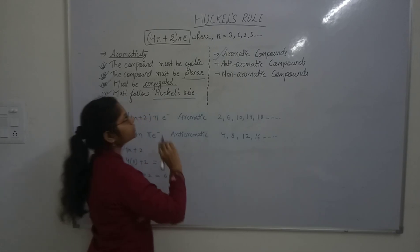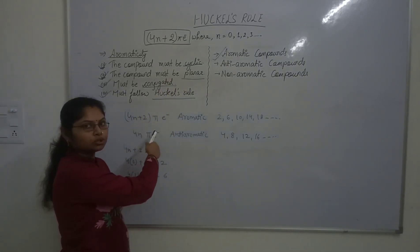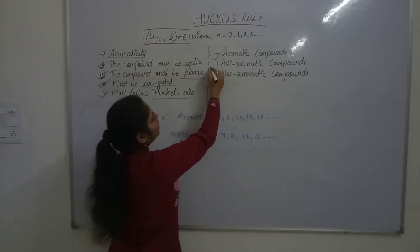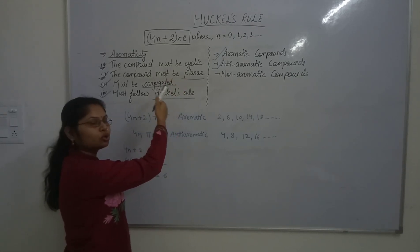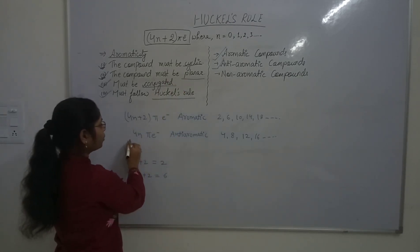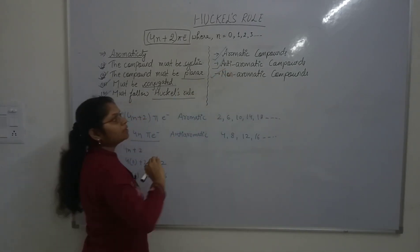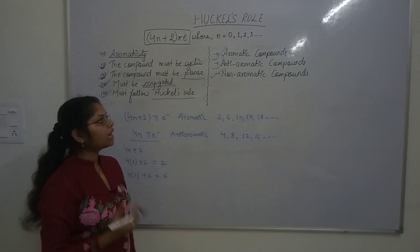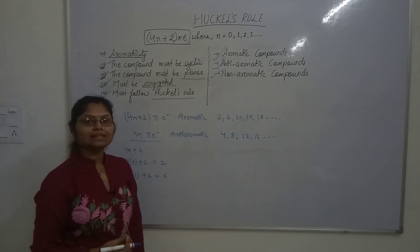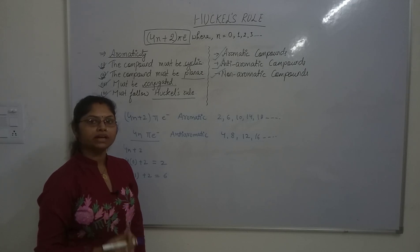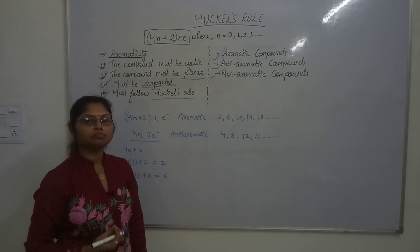In summary, aromatic compounds are cyclic, planar, conjugated, and have (4n + 2) pi electrons. Anti-aromatic compounds are cyclic, planar, conjugated, and have 4n pi electrons. Non-aromatic compounds may be cyclic or straight-chain structures like cycloalkanes such as cyclopropane or methane. Let us discuss some examples, which are also important from an examination point of view.